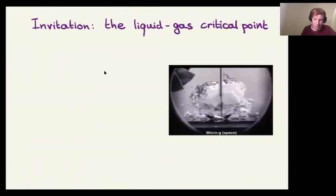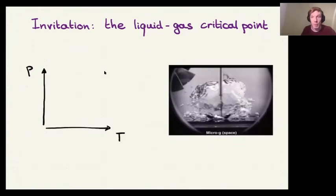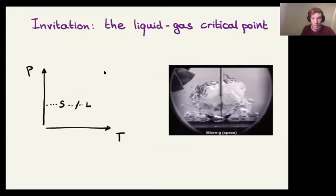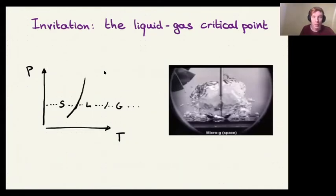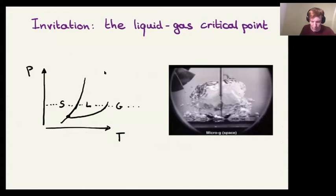Physicists describe the transition with a phase diagram, where the vertical axis is pressure and horizontal axis is temperature. At constant pressure, water and many other substances start in a solid phase. Increasing temperature gives a liquid phase, and increasing further gives a gaseous phase. The liquid-to-gas phase transition merges with the solid-to-liquid at the triple point, and the liquid-to-gas transition ends at a point known as the critical point.